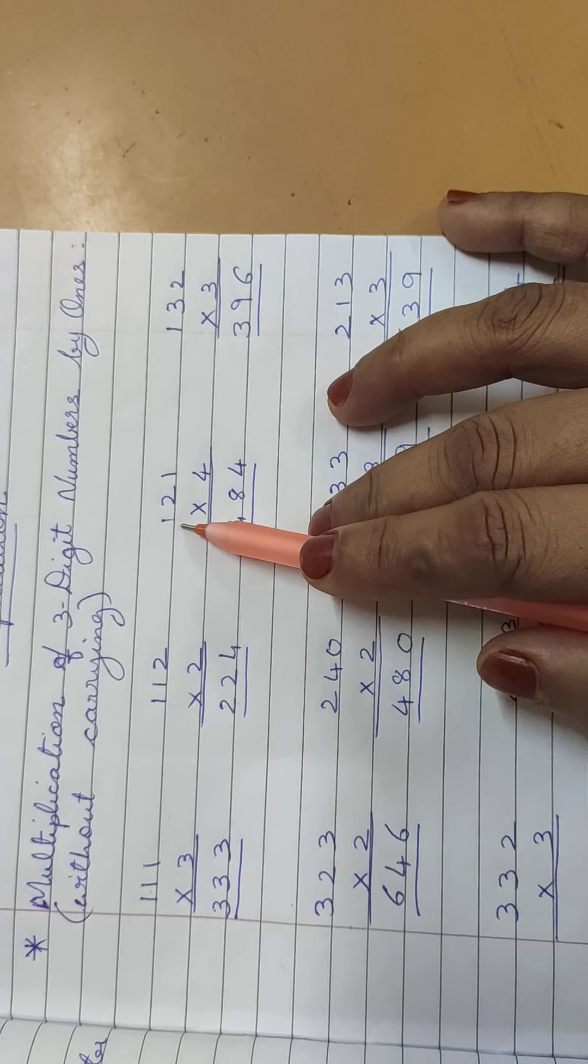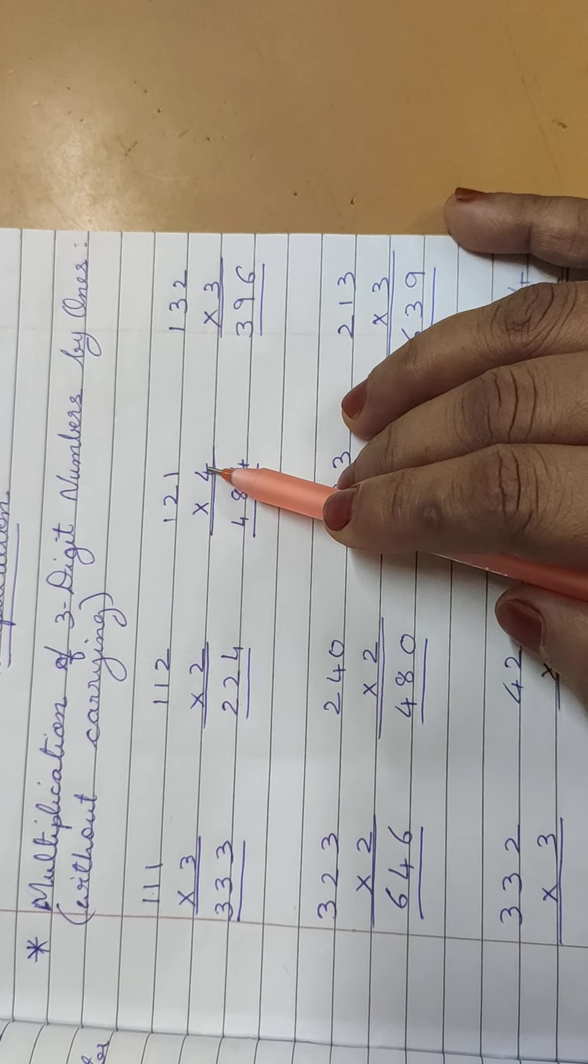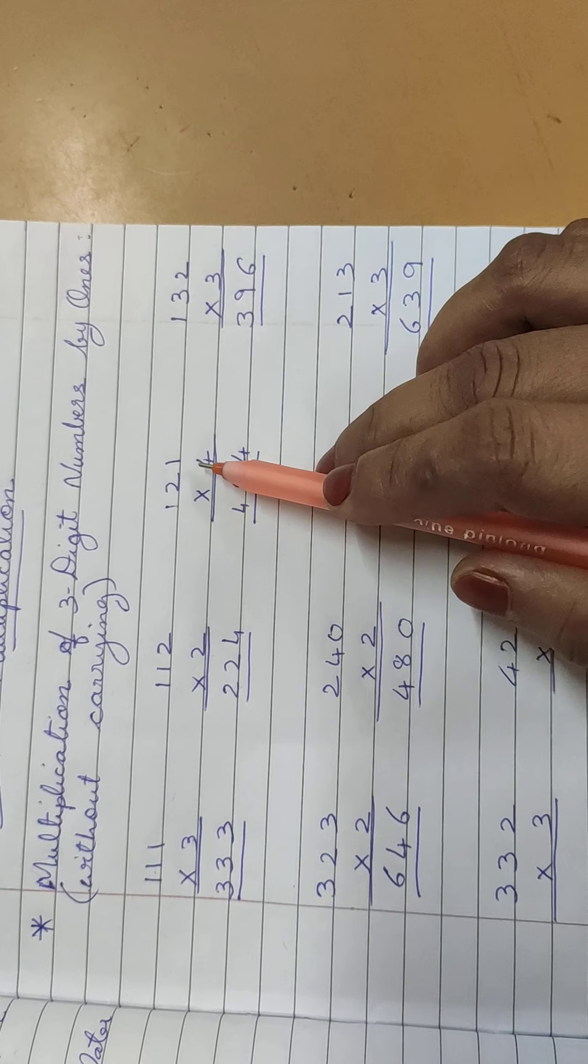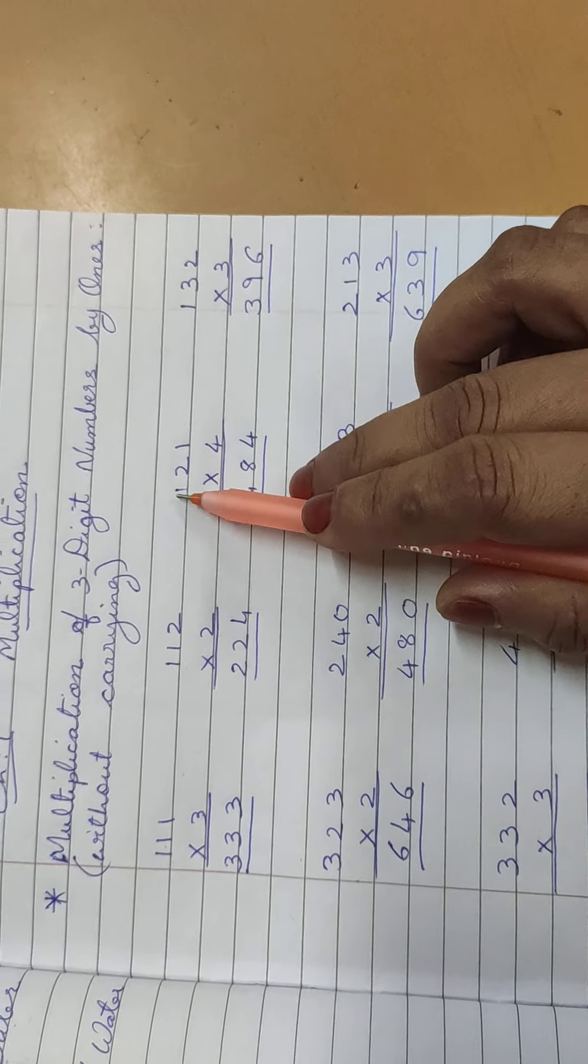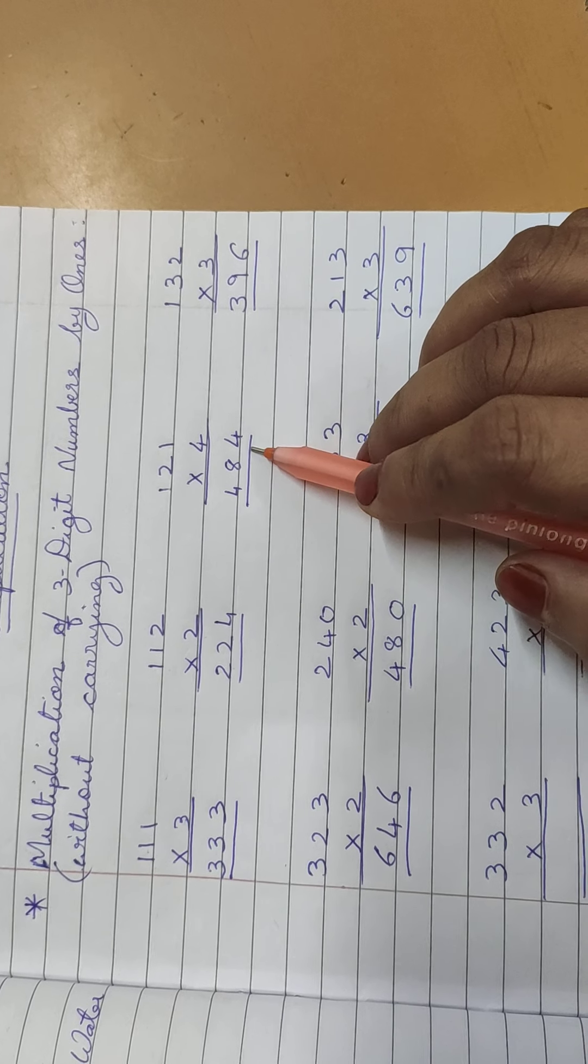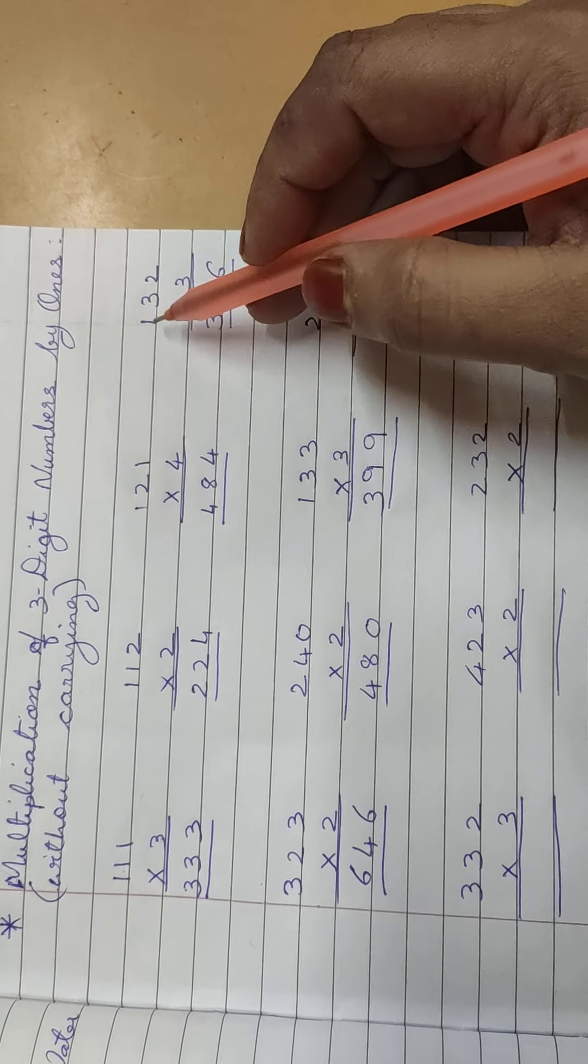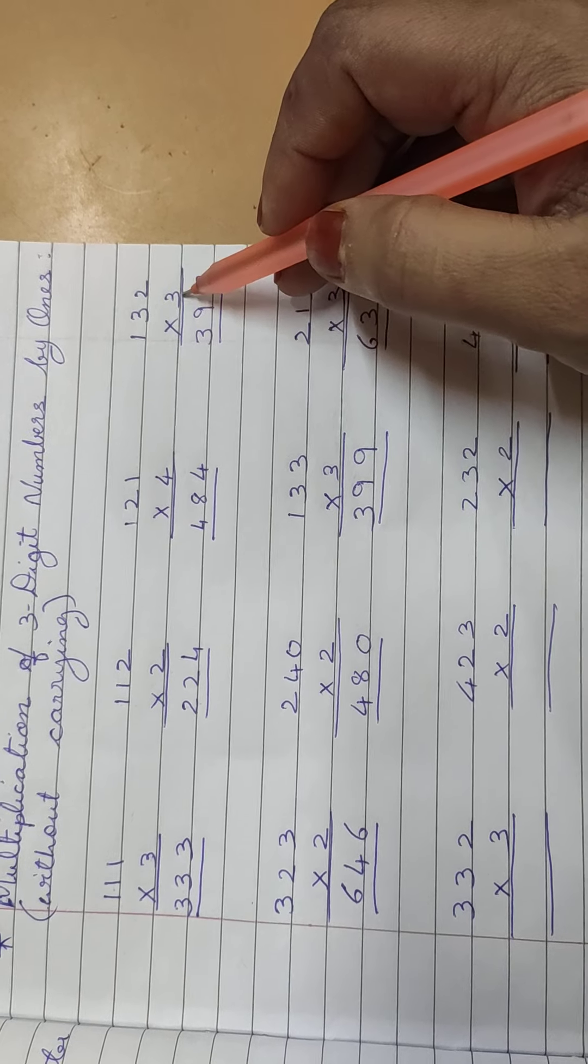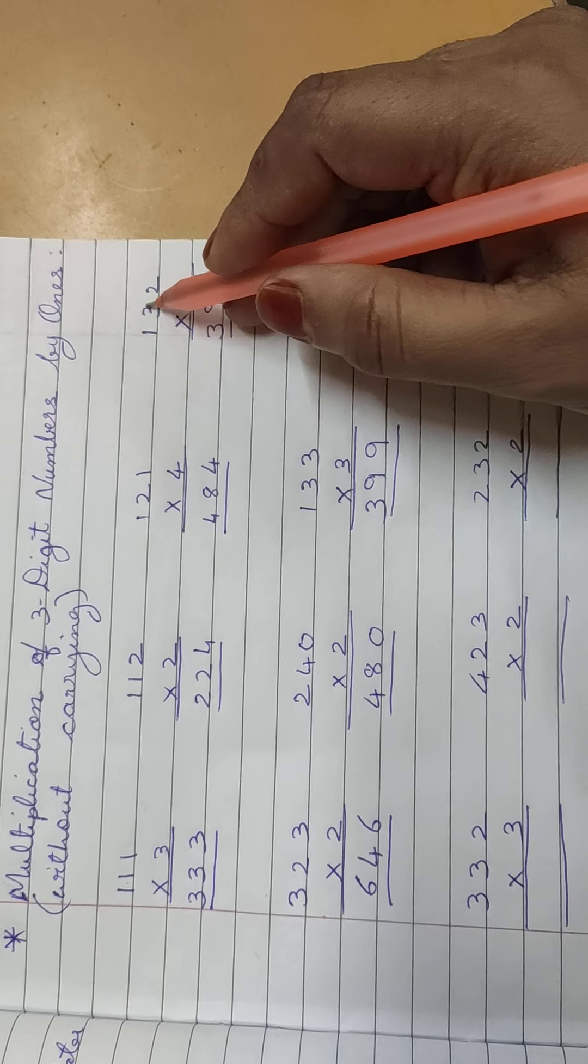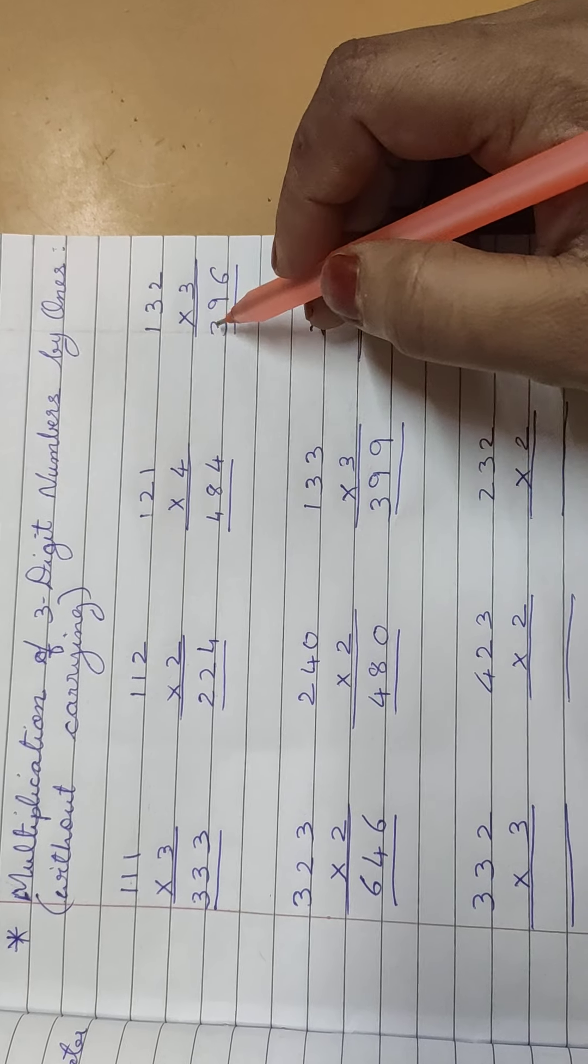Let's see ahead, 121 multiply by 4. Look here 4 ones are 4, 4 twos are 8, 4 ones are 4, so 484. Again 132 multiply by 3. 3 twos are 6, 3 threes are 9, 3 ones are 3.